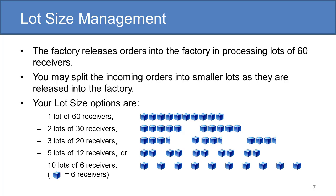Currently, as in the first assignment, the factory releases orders into the factory in processing lots of 60 receivers. However, in this assignment, you may split the incoming orders into smaller processing lots as they are released into the factory. Specifically, you may choose to release each order as 1 lot of 60, 2 lots of 30 receivers, 3 lots of 20 receivers, 5 lots of 12 receivers, or 10 lots of 6 receivers.